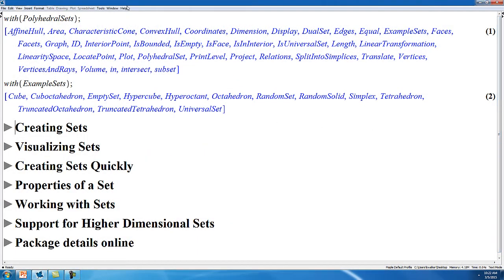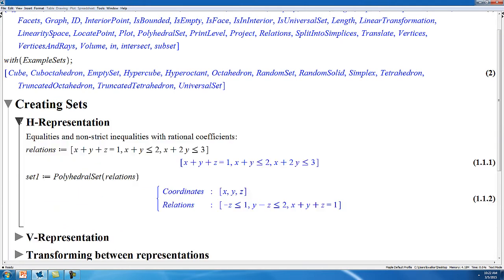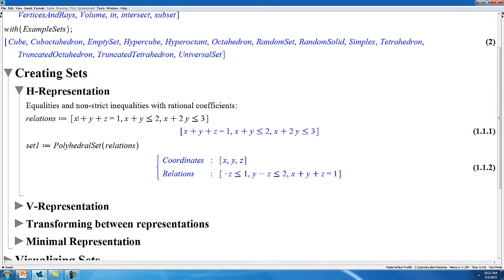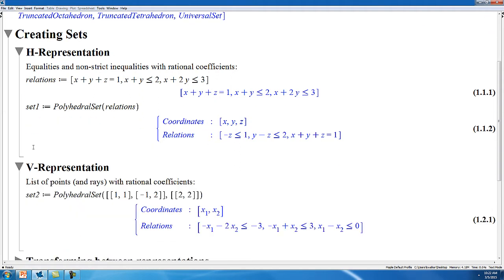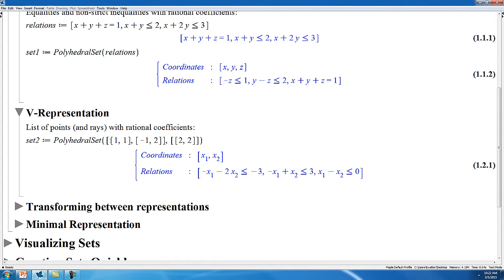50 new commands have been introduced in Maple 2015 for working with polyhedral sets, both in the polyhedral sets package and its example sets sub-package. Let's go through some of those commands now. First off, for creating sets, you can create a set using its H representation by passing a list of equalities and inequalities with rational coefficients, or from a set's V representation by passing a list of vertices and a list of rays.